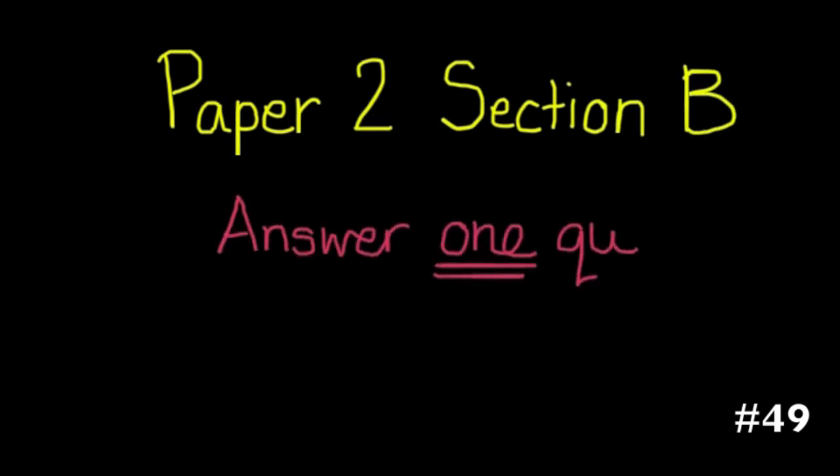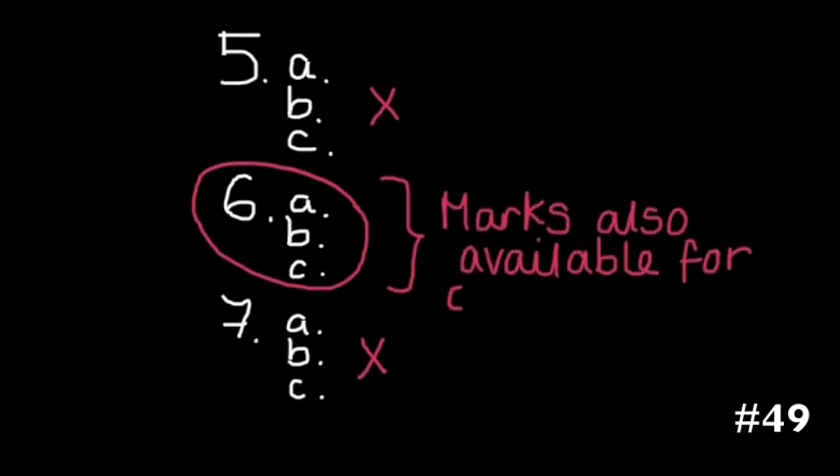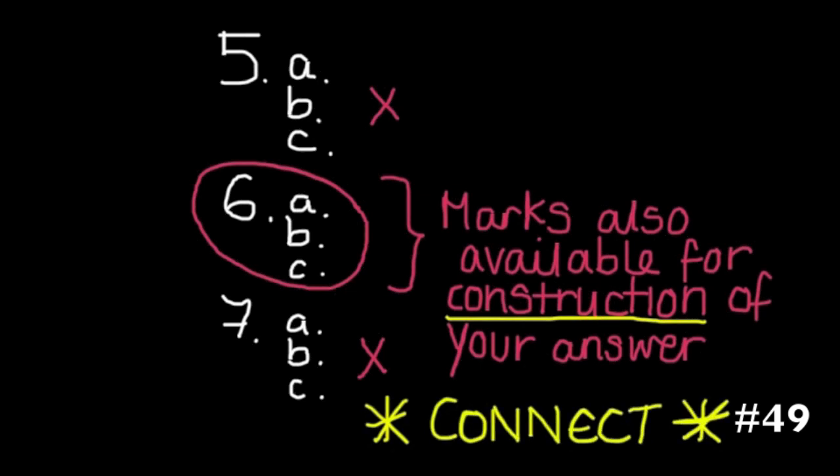Paper 2, section B. The instructions will tell you to answer one question, sections A, B and C. So if for example you've got question 5, 6 and 7, you're going to pick one of them and do A, B and C from that one. You can't do 5A, 6B and 7C. That's a major mistake that some students make. There's also marks available for construction of your answer. There's normally a common theme between A, B and C. So even though you're going to address them separately, if you can reflect the theme throughout, then you're going to get marks for the quality of construction of your answer.